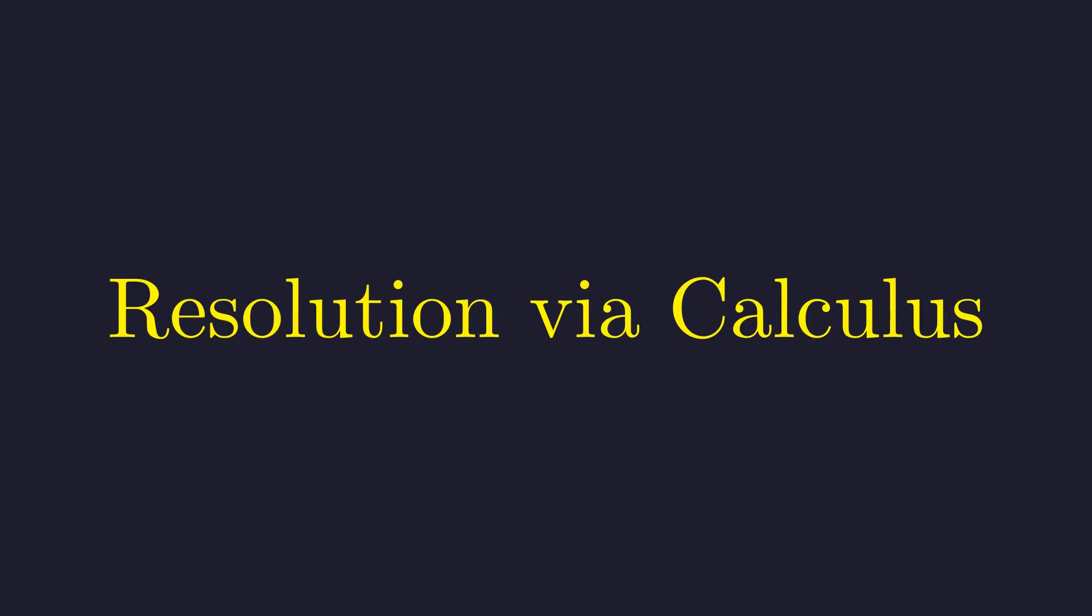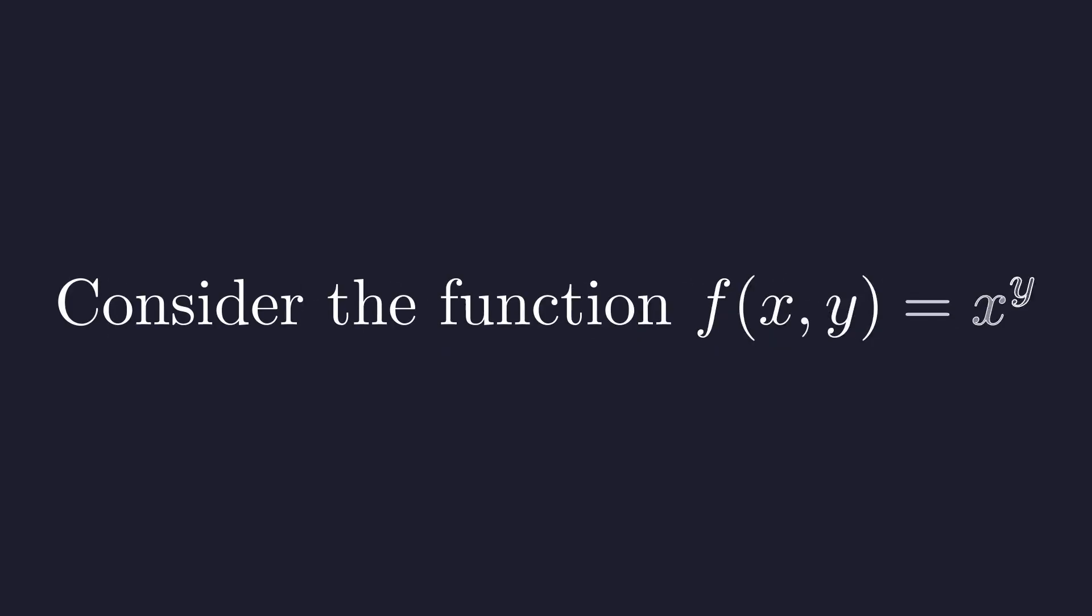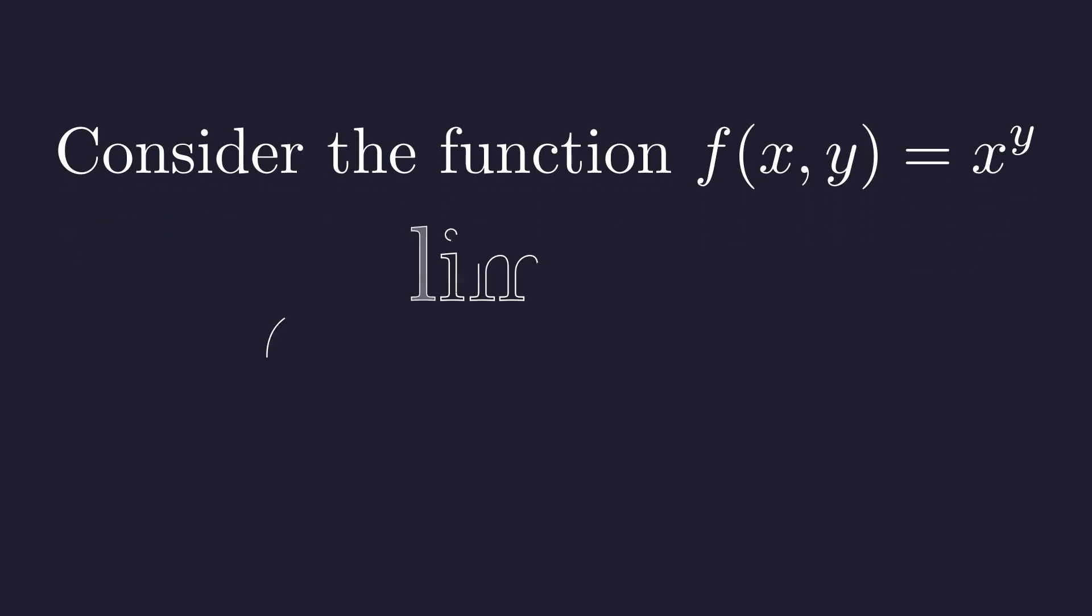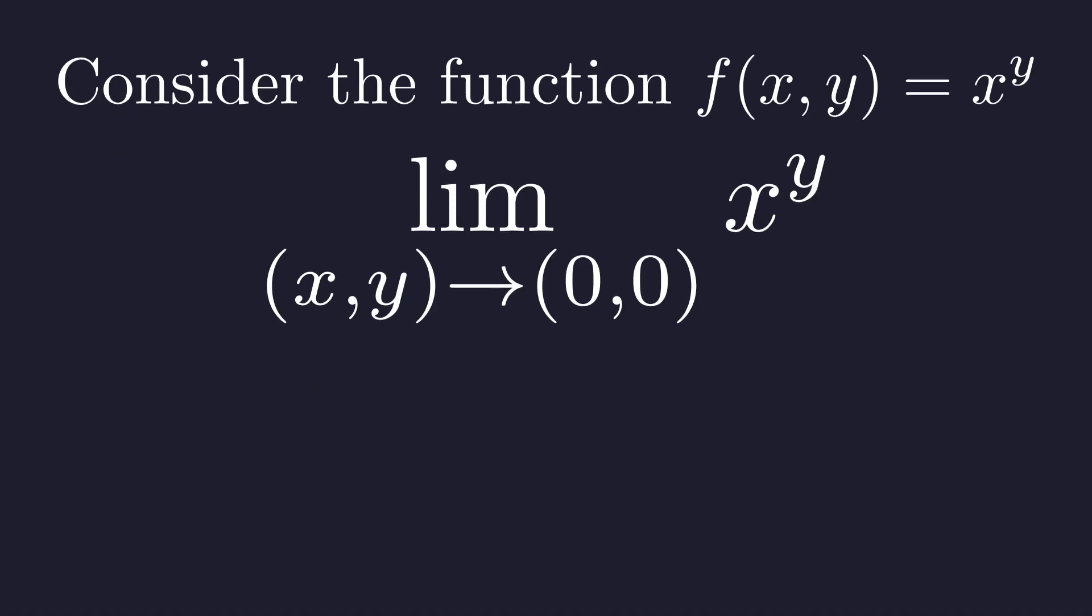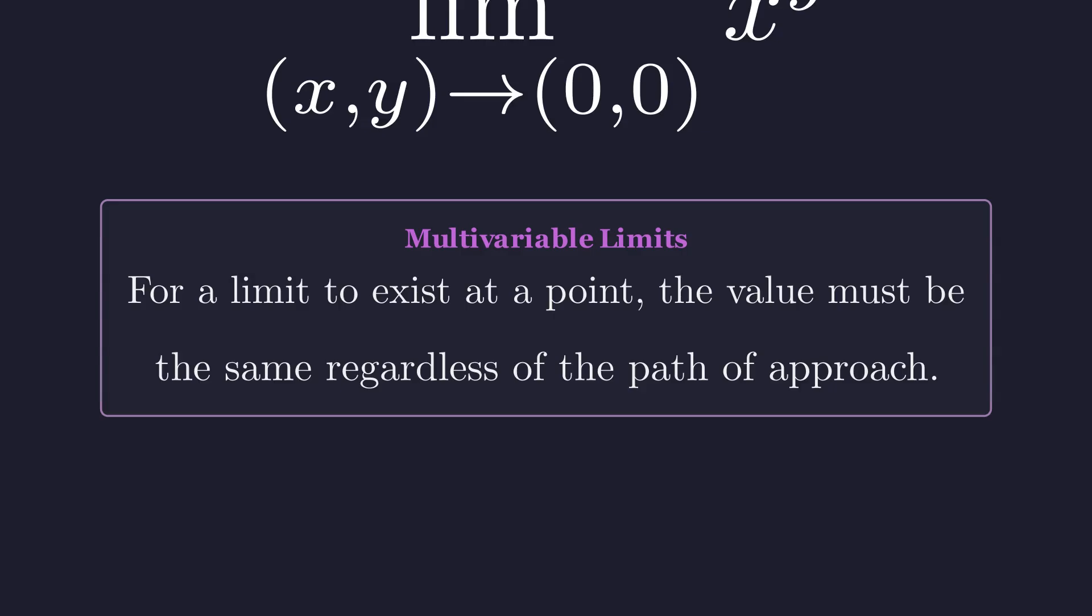We have a logical stalemate. To resolve this, we must turn to the rigorous framework of calculus and limits. Let's reframe the problem by considering the surface defined by the function z equals x to the power of y. The question now becomes: what is the limit of this function as the point (x, y) approaches the origin (0, 0)? A critical rule in multivariable calculus states that for a limit to exist, the function must approach the same value along every possible path to that point. If we find two paths with different limits, the limit does not exist.